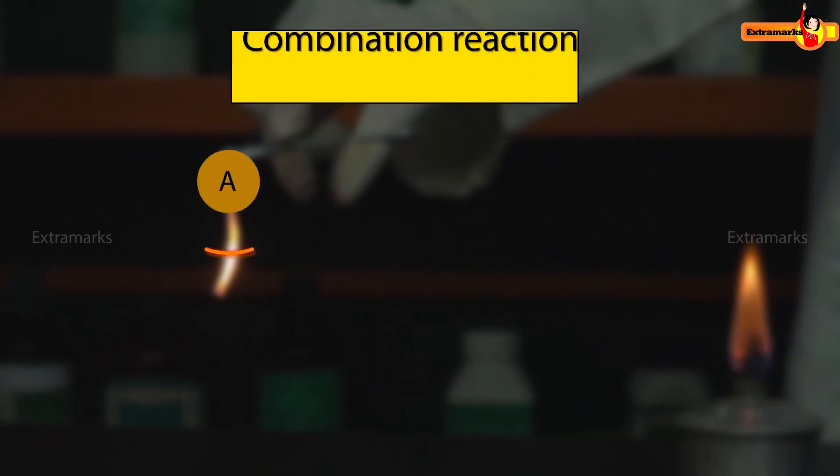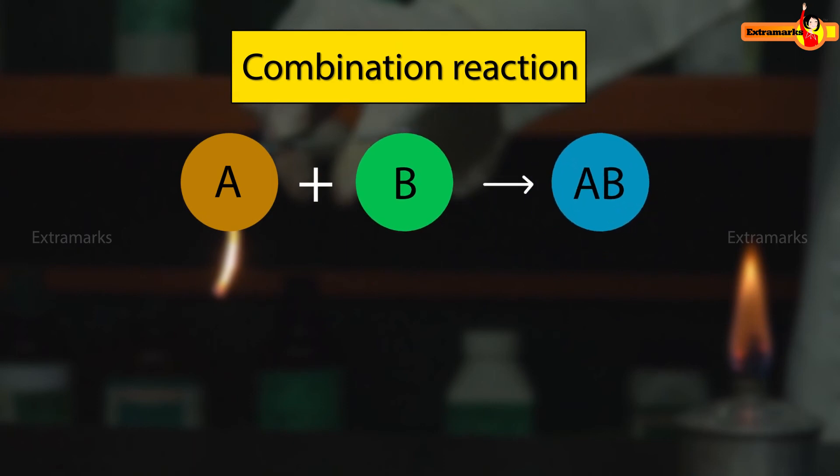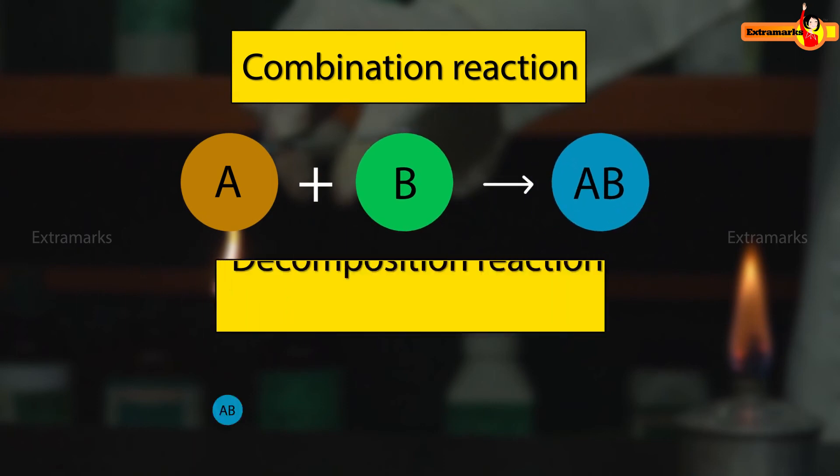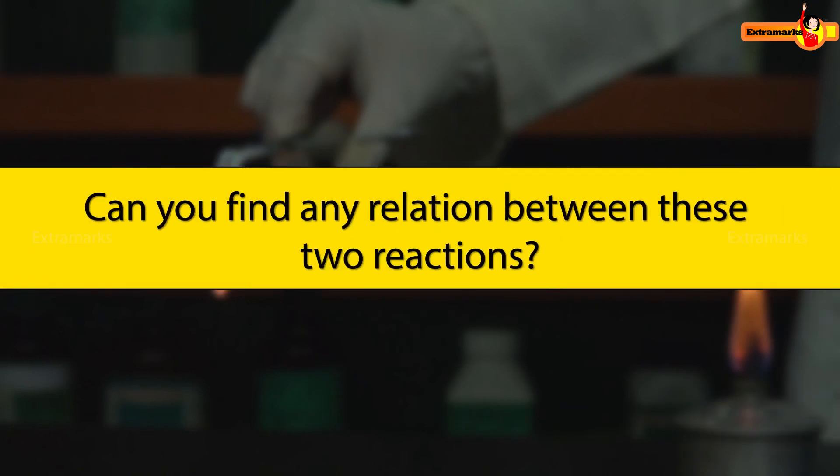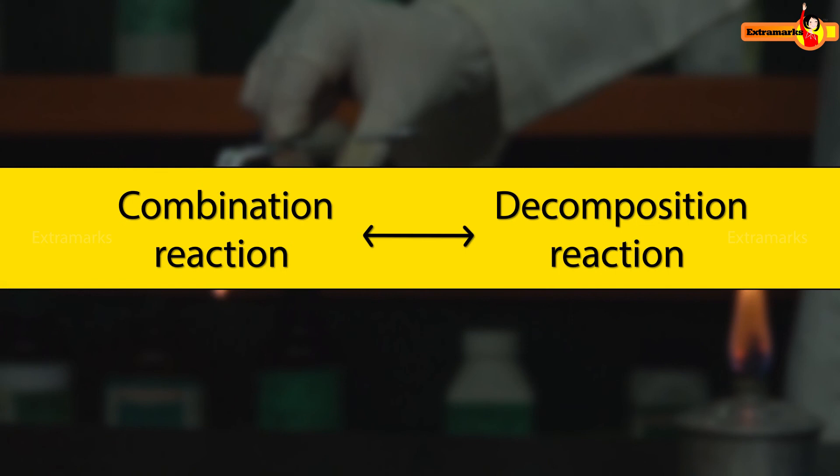In a combination reaction, two or more reactants combine to give a single product, while in a decomposition reaction, a single reactant decomposes to give two or more products. Can you find any relation between these two reactions? Yes, combination and decomposition reaction are reverse of each other.